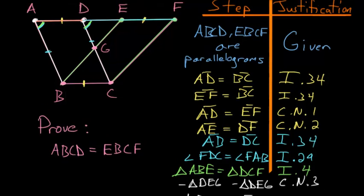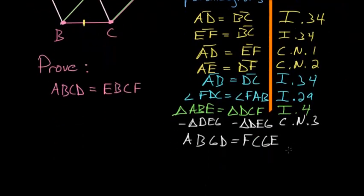Now, going back up, we can add this triangle here to each of them. So, let's add triangle GBC to each. And we can do that because of common notion number 2.